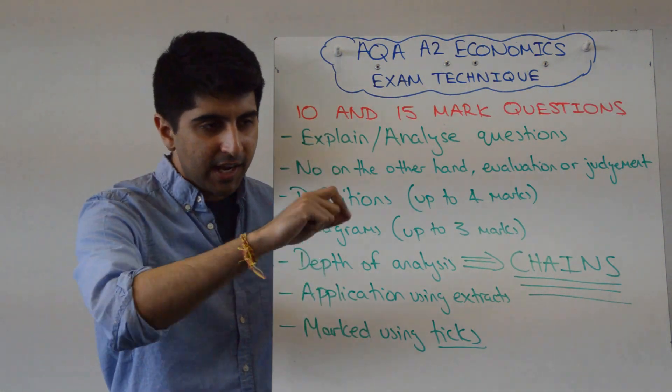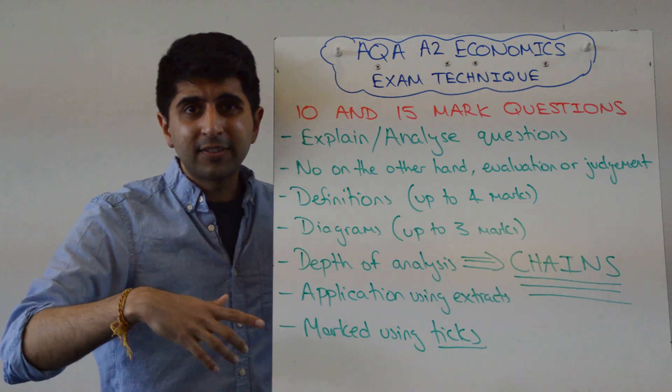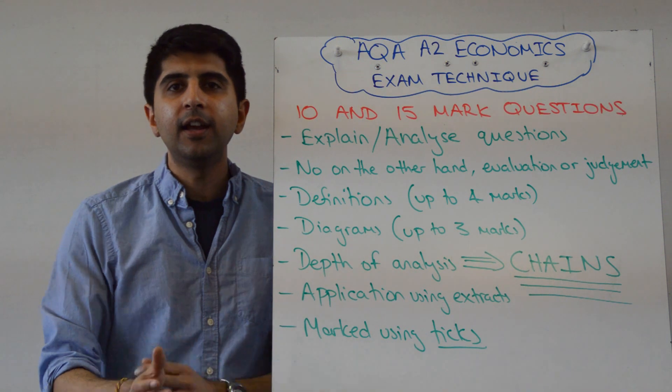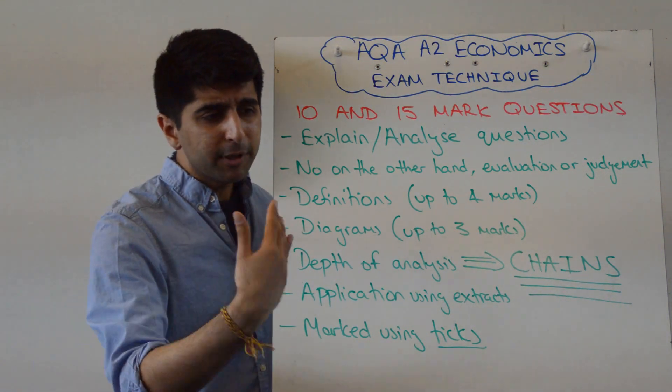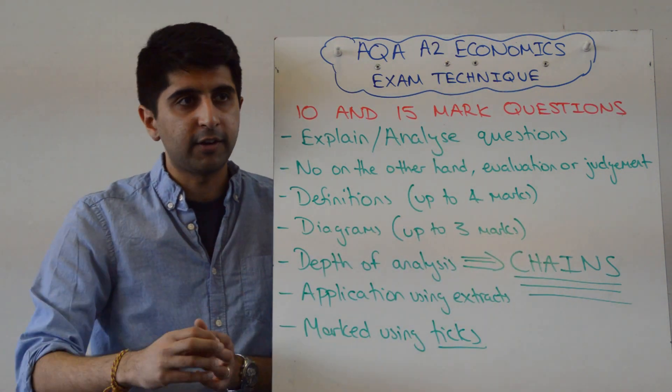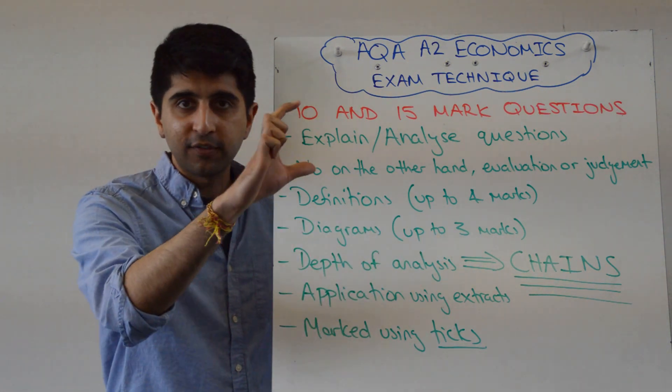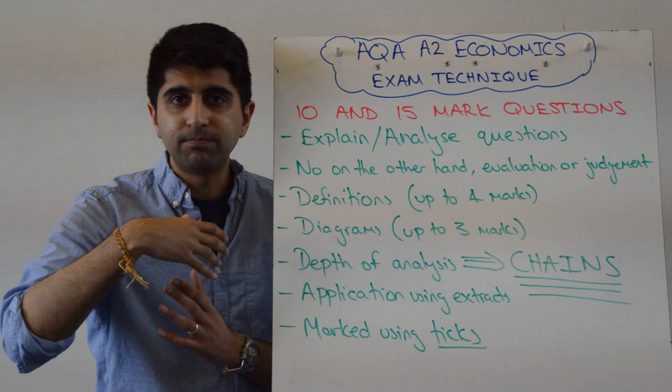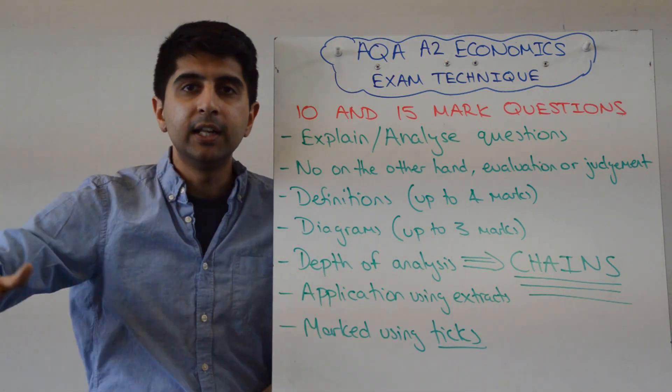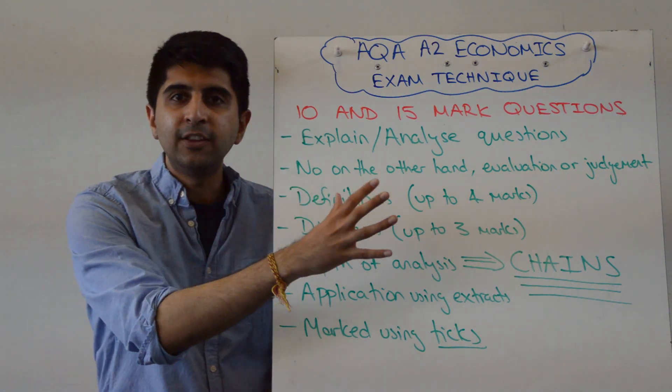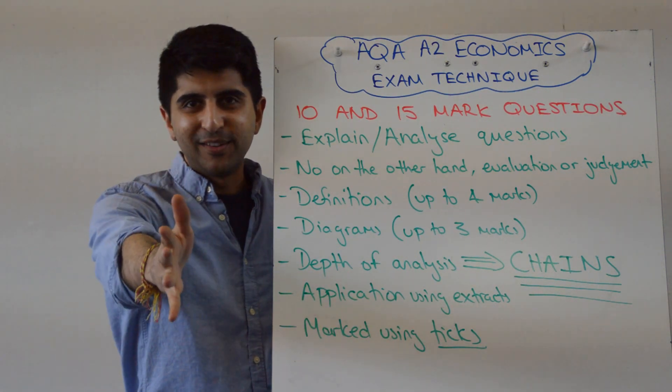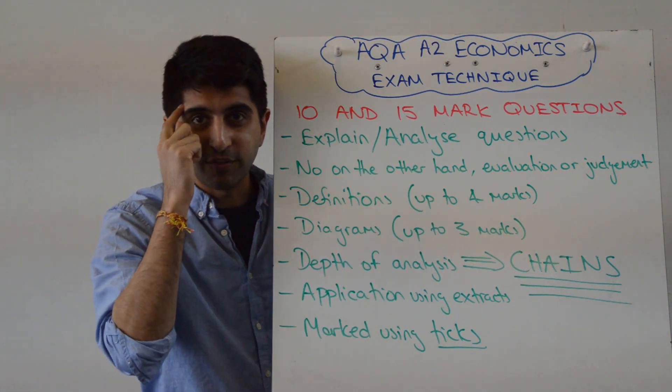And then every time you write something in the chain, you rack up the ticks constantly. Some chains are up to eight marks. Absolutely insane. That should be your target. Keep going on this chain of analysis. Now, that chain might also include your diagram. You refer to your diagram. Great. The diagram has already given you two marks just for the diagram itself. And then when you start talking about it and including it in chains, you rack up your marks as well. So chains of analysis in answering whatever question is in front of you is going to be the key to examination success, to getting full marks. Chains. Don't forget chains.